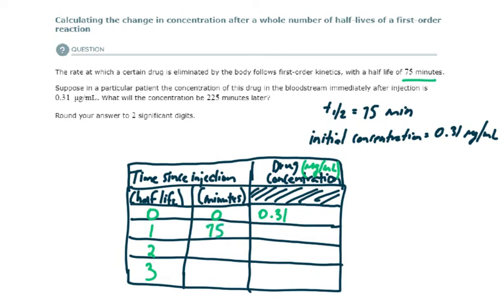So let's take 0.31 micrograms per milliliter and half it or divide it by two. We would have a concentration of 0.155 at the first half-life.